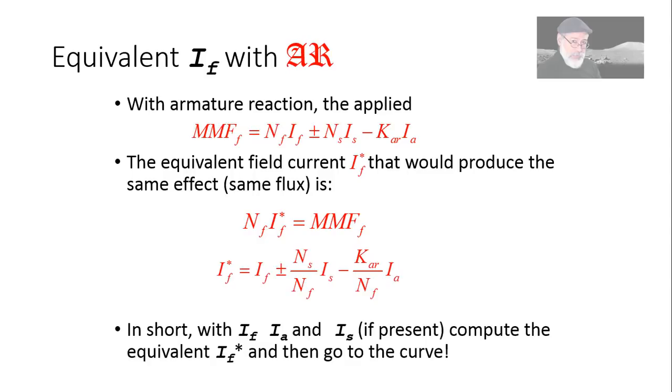That is going in the horizontal axis of the magnetization characteristic. In short, when we have the field coil current, the series coil current and the armature current, we compute the equivalent IF* as above and then we go to the curve. This curve. The curve for K·Φ.